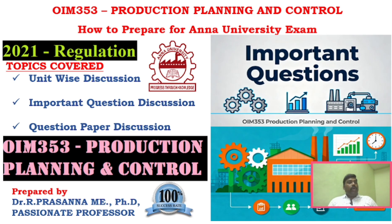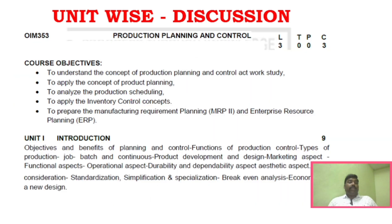We will start with unit-wise discussion. In Unit 1 you will study about production control, production design and development. Product development is one of the key areas. Also break-even analysis, lot planning, and benefits and planning are key areas in Unit 1.